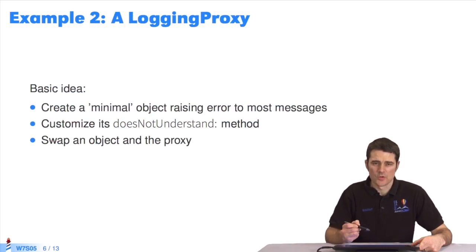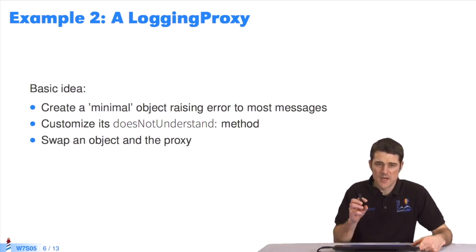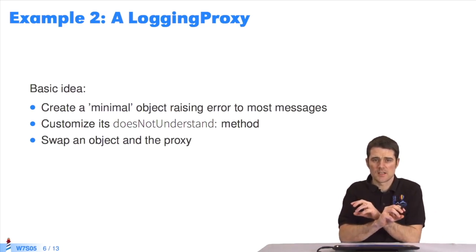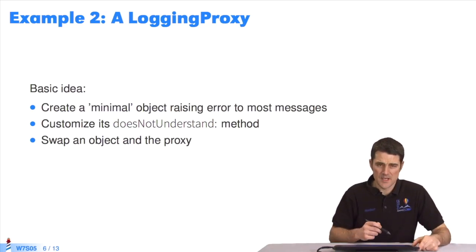Another example we'll look at is LoggingProxy. The basic idea here is to create a minimal object that contains few methods, and to customize its doesNotUnderstand method. Then, we'll swap a domain object with this proxy, or minimal object, using become.